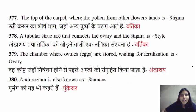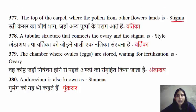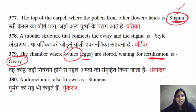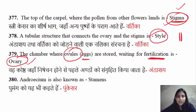The top of the carpel where pollen grains land is the stigma. The part where fertilization occurs and where eggs or ovules are formed is the ovary.